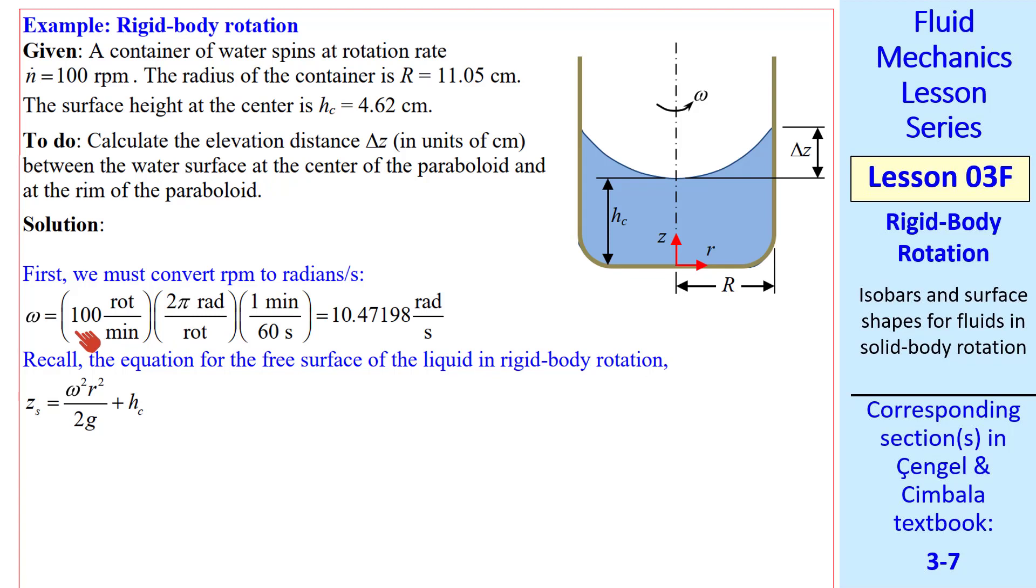The first thing I do, and this is very critical, is to convert from n dot in rpm to omega in radians per second. 100 rpm is 100 rotations per minute. There are 2 pi radians per rotation in 1 minute per 60 second.